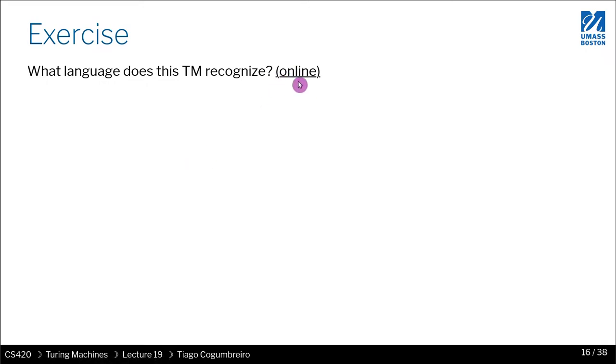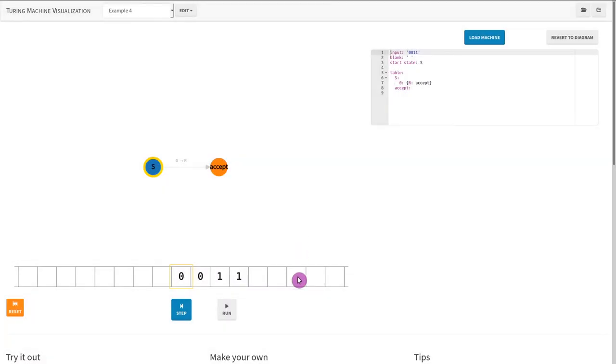So another exercise that you might want to do is look at a Turing machine and try to understand what does it do? What is the language that it recognizes? So in this case, let's see. The only thing it does is it reads a zero and it moves to the left. So it will accept this string, zero, one, one, right? Because we just need to reach accept. So what do you think this Turing machine represents?